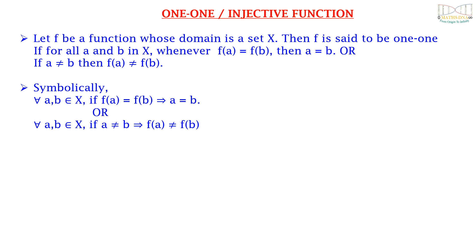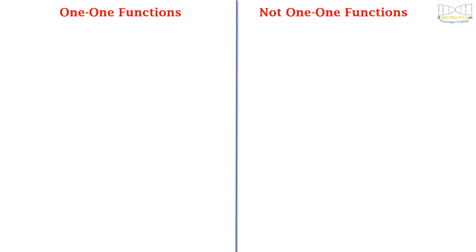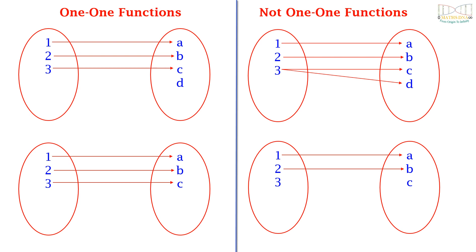Let us understand this more clearly with the help of some diagrams of 1-1 functions and not 1-1 functions. The functions on the left side are 1-1 because for each element in the domain there exists only one image in the co-domain. But the functions on the right side are not 1-1, as for one element there exist two images in the co-domain, and in the second example an element has no image in the co-domain.